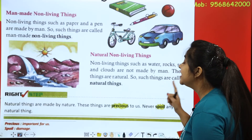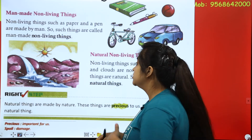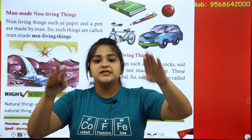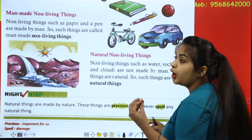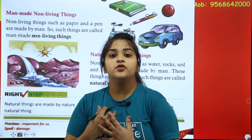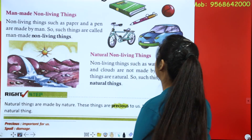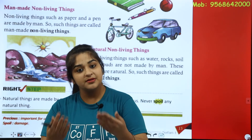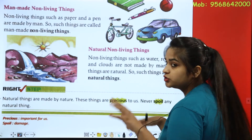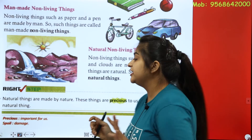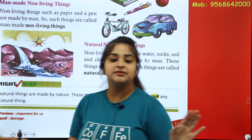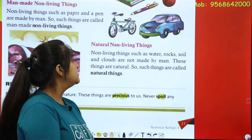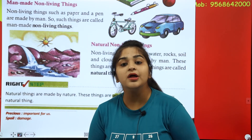Next are natural non-living things, which we get from nature. Non-living things such as water, rocks, soil and clouds — these are made from nature. The big rocks are made from nature. These are not made by man, so they are called natural non-living things.